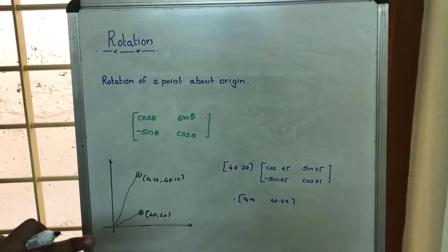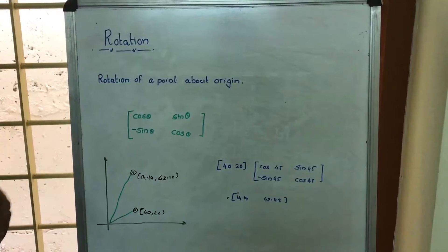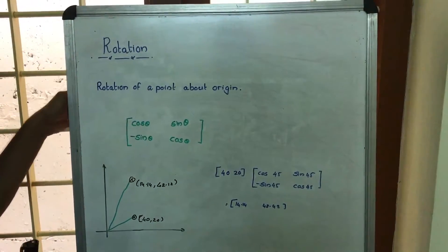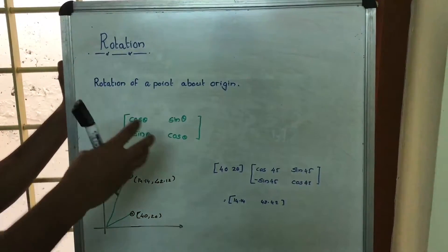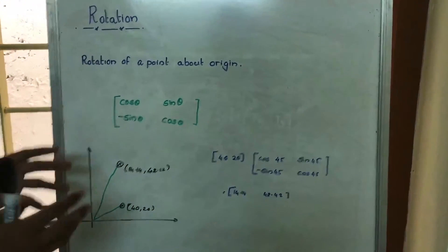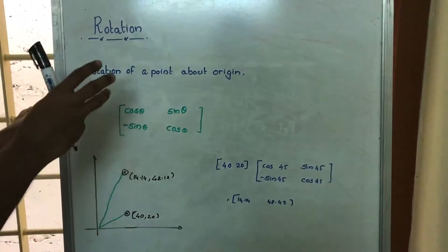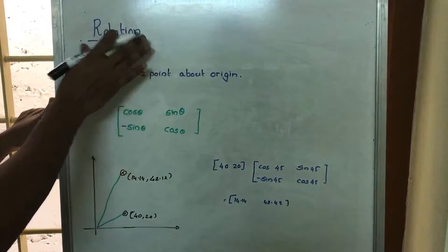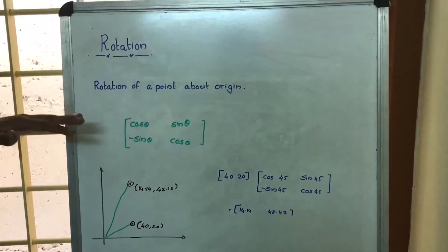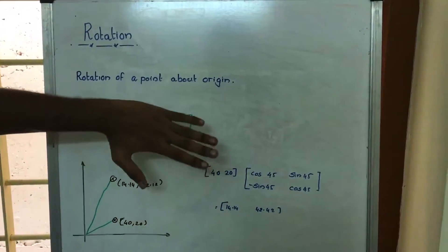Rotation: In computer-aided designing, there are various processes like translation, scaling, etc., where we are moving the position or increasing the size. Here there is another process, rotation. In rotation, what we do is rotate a point about the origin.